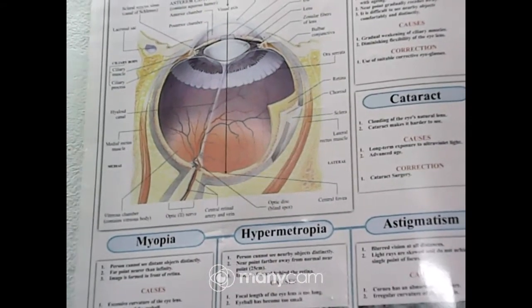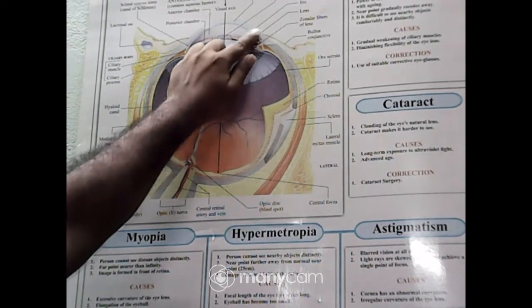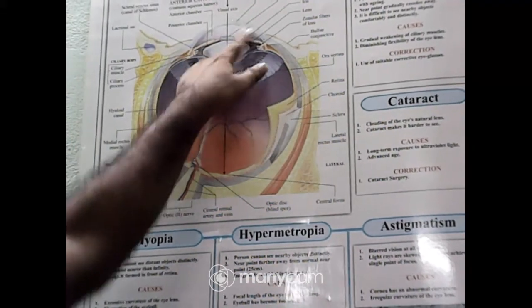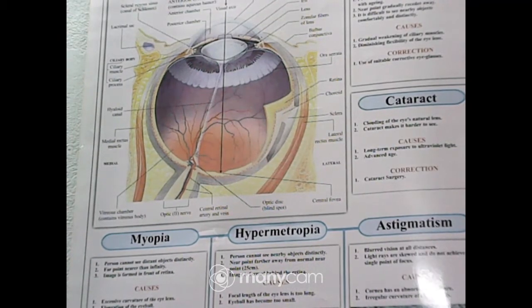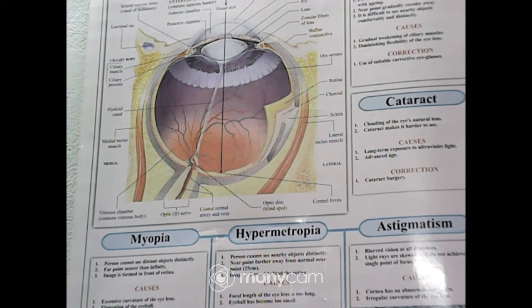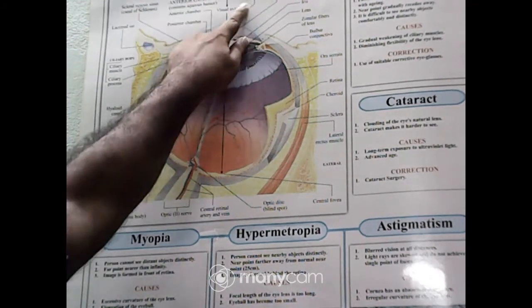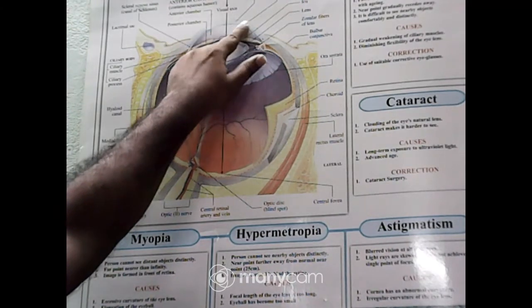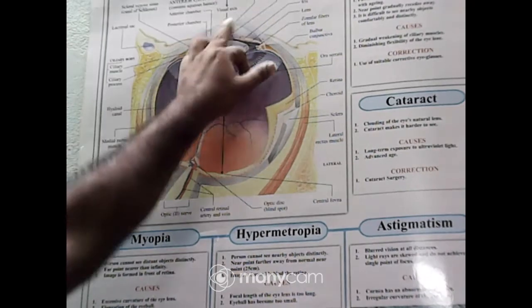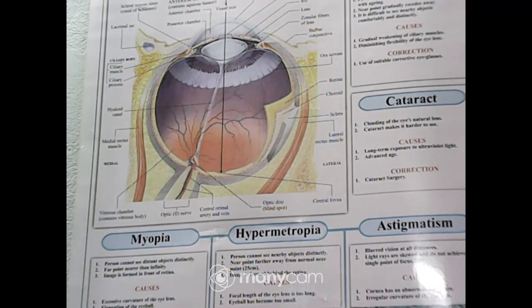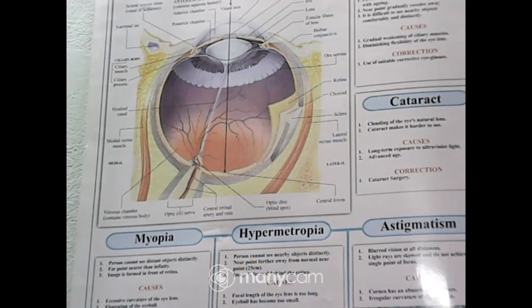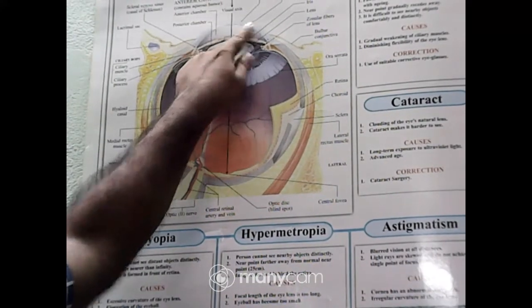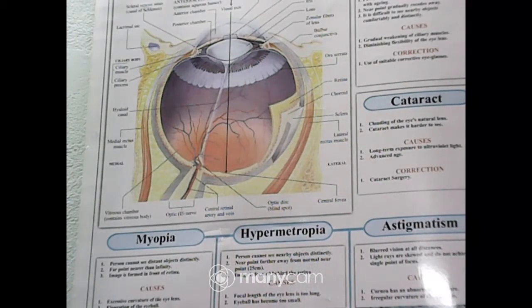What is cornea? Cornea is the outermost part of our eye. It is made of a transparent substance. Light enters into the eye through the cornea. The main function of the cornea is to protect the inner part of the eye, and it also helps to focus the light as it has a converging nature.